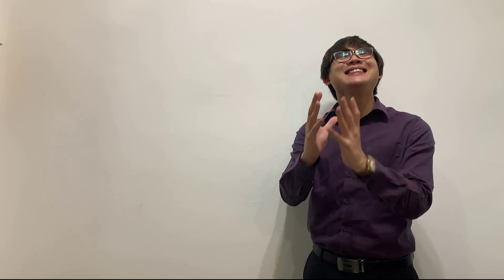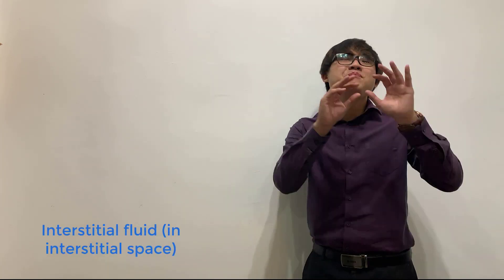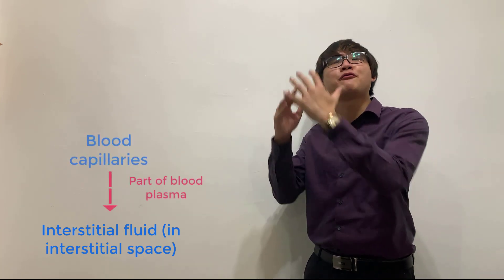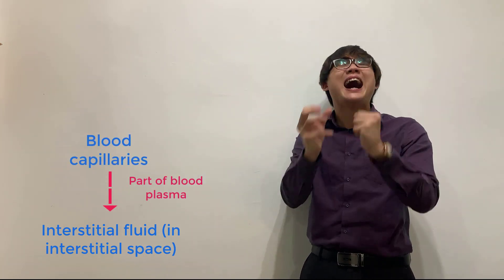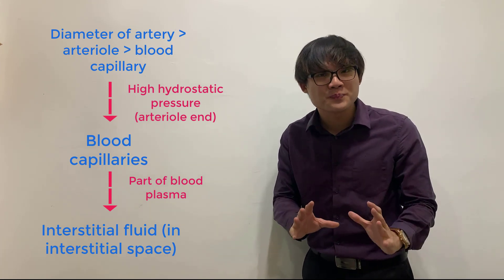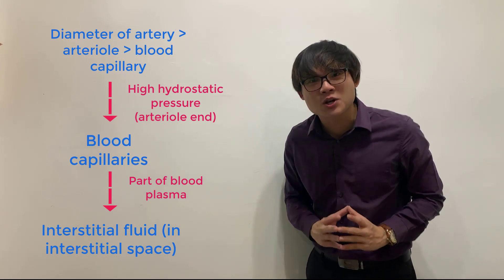So again, in the interstitial space, we have interstitial fluid, and this interstitial fluid is actually coming out from the blood capillaries due to the high hydrostatic pressure at the arteriole. Do you understand this concept?